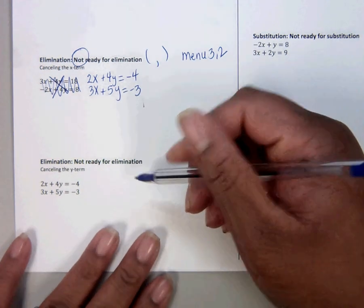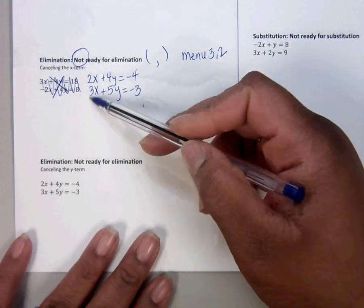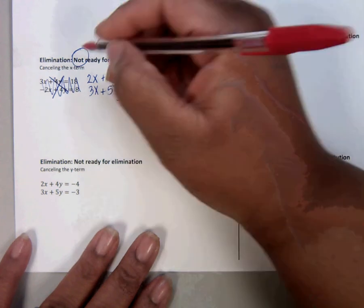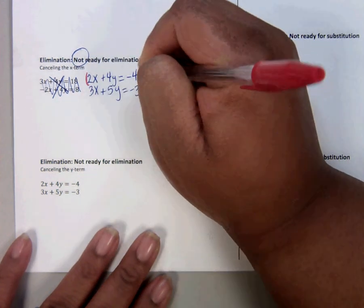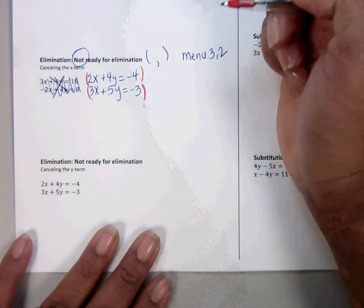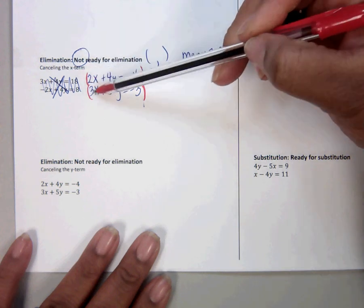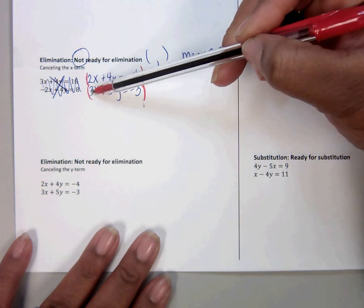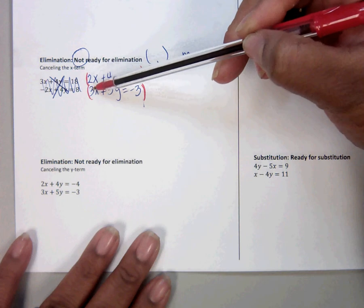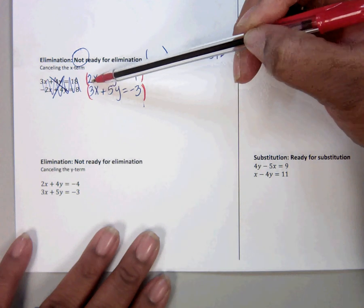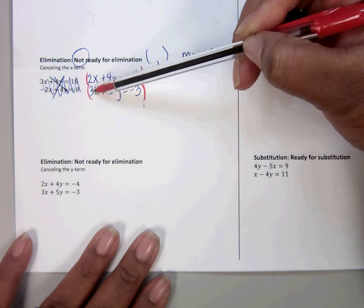So let's do this. We cannot just add. Again, that's 5 and that's 9. So we have to make it ready for canceling. We want to multiply each equation, the entire equation, by some number. Well, if I want the x's to be ready for canceling, I can make them both 6. That's the lowest number. Then I could make 2 become 6 and then 3 become 6 and they match.